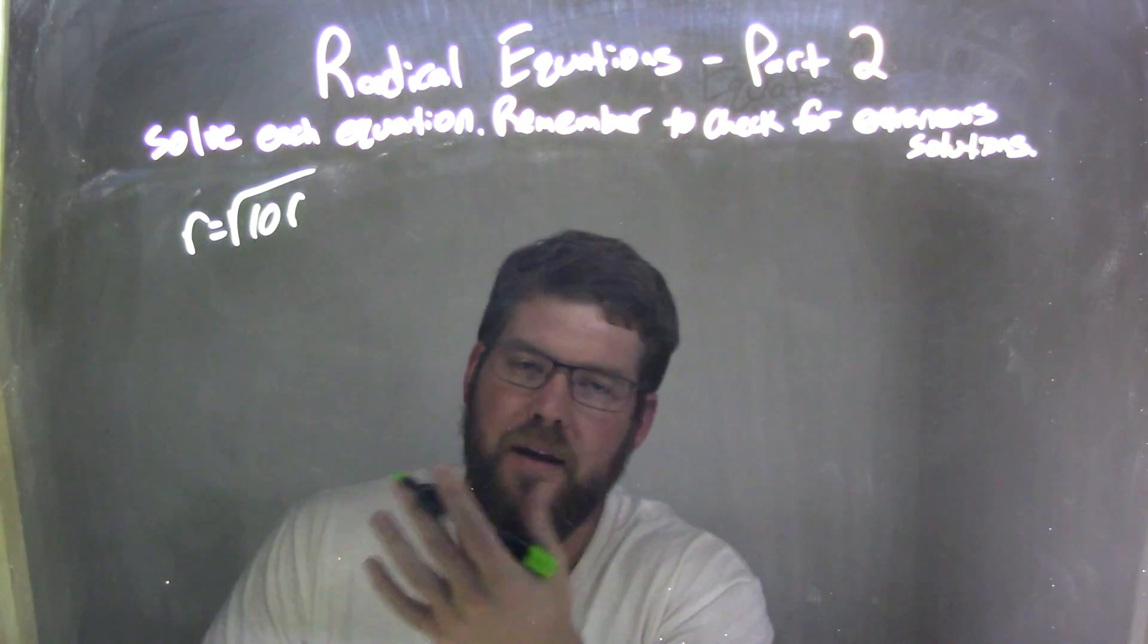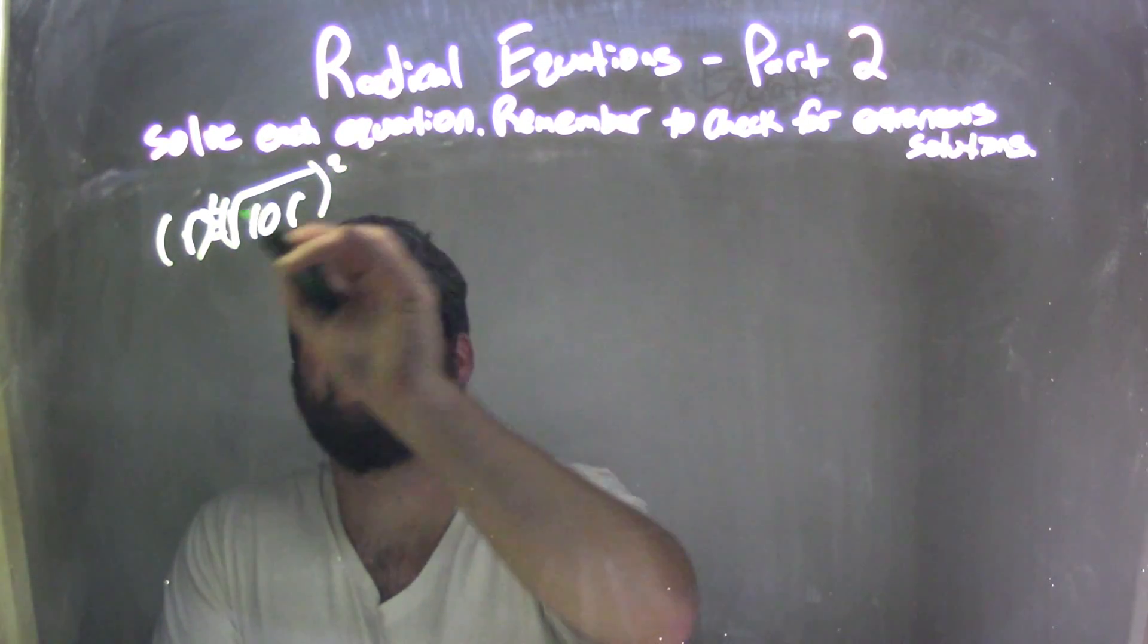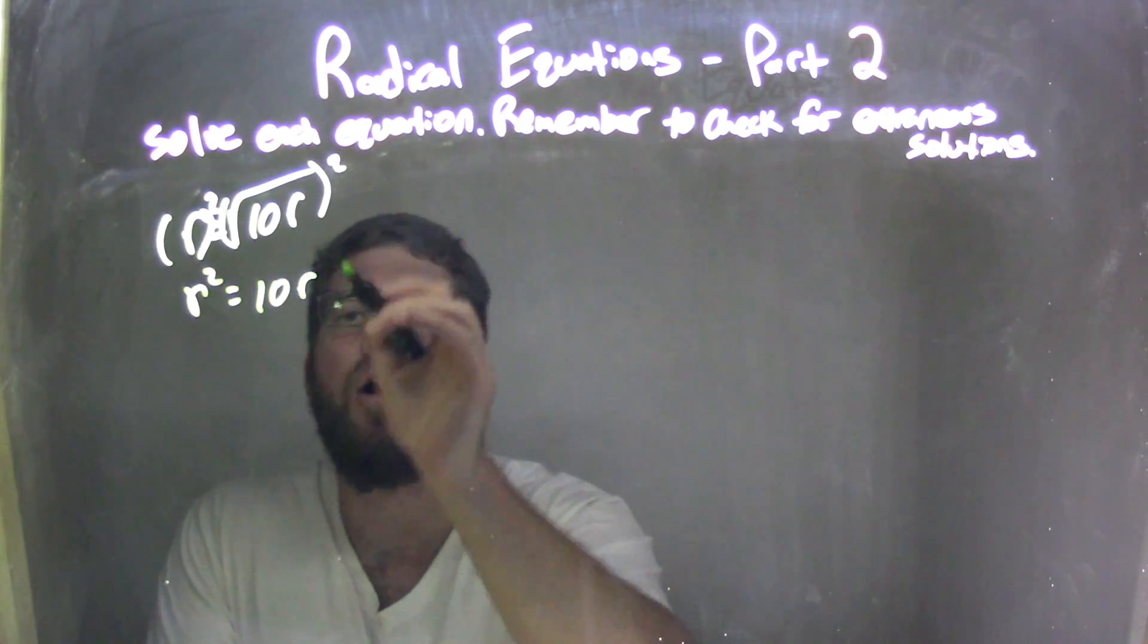To get rid of that square root, like always, I'm squaring both sides here. So I'm squaring both sides, and I have r squared equals 10r. Got rid of that square root.